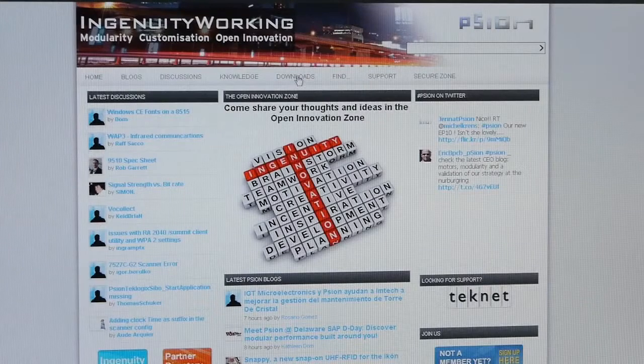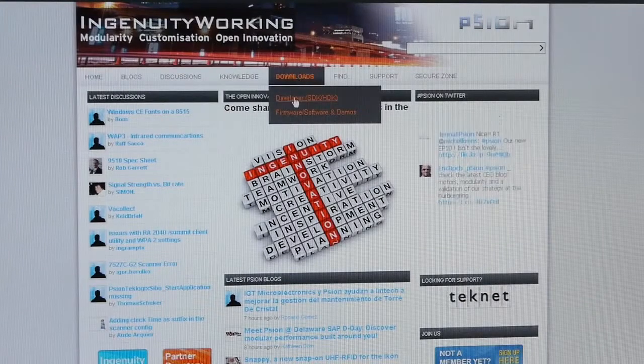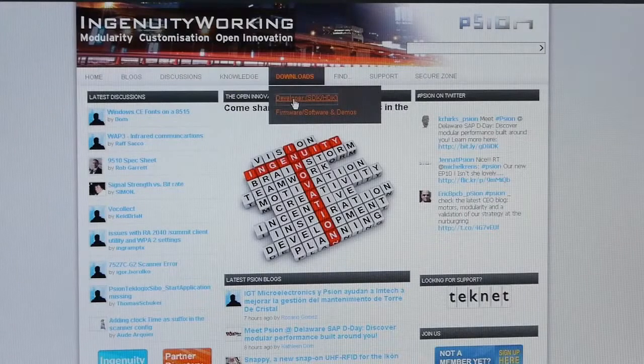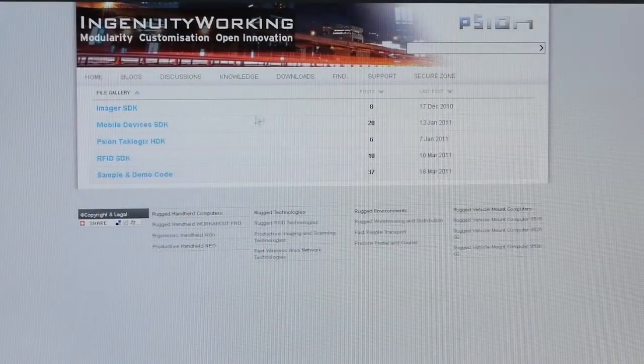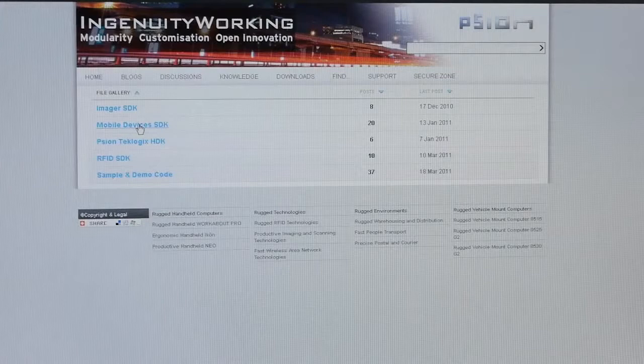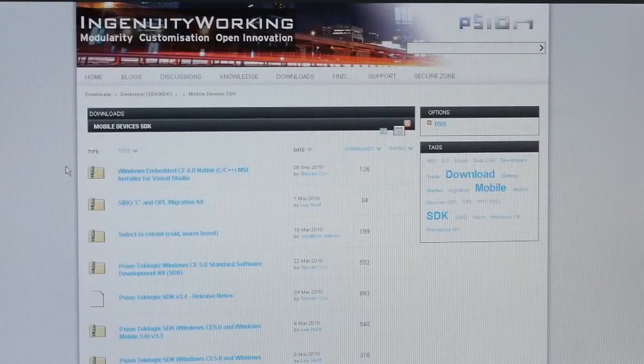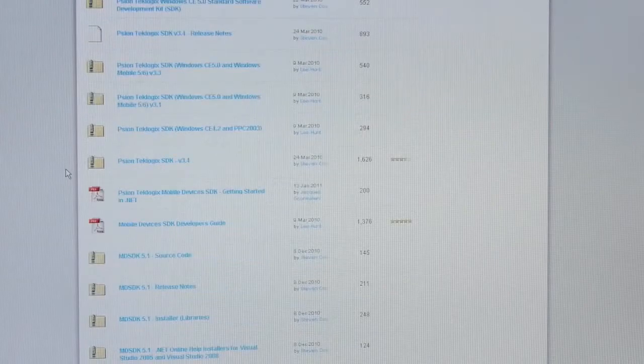For those of you who are new to developing on our devices, you need to know that the SDK is available free of charge for download on IngenuityWorking.com. All you need to do is hover over the Downloads menu, select the Developer SDK link, then select the Mobile Devices SDK link, and look for the latest Mobile Devices SDK release.